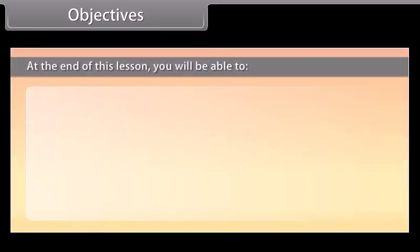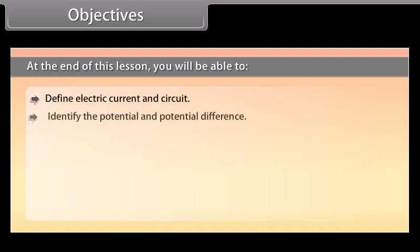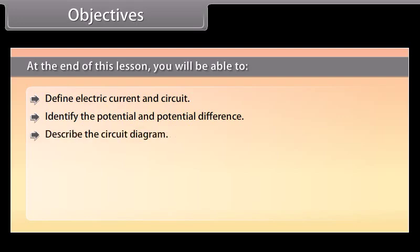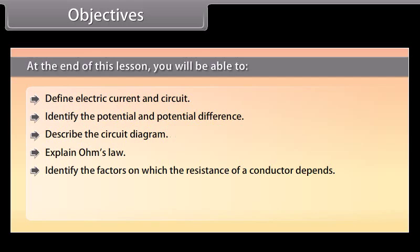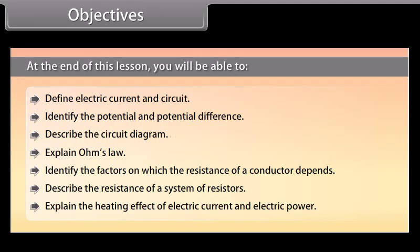Objectives. At the end of this lesson, you will be able to: define electric current and circuit; identify the potential and potential difference; describe the circuit diagram; explain Ohm's Law; identify the factors on which the resistance of a conductor depends; describe the resistance of a system of resistors; explain the heating effect of electric current and electric power.